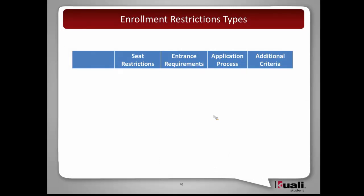Beyond that, we get into a more fuzzy area where some schools or programs might require an application process — something written and submitted by the student into the department or school so that it can be manually reviewed before approval is given for enrollment into a program. There's also an additional criteria bucket as a catch-all for everything else — there might be an audition process or similar.